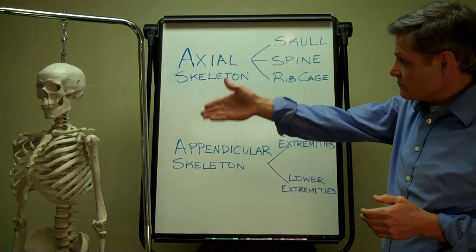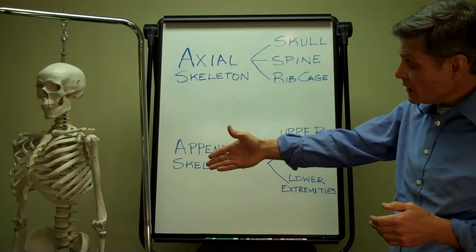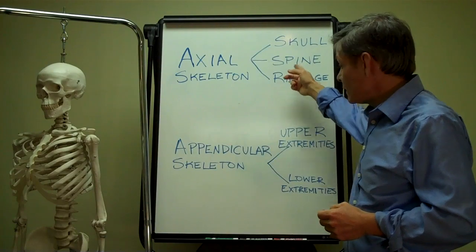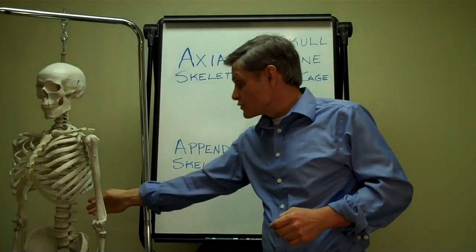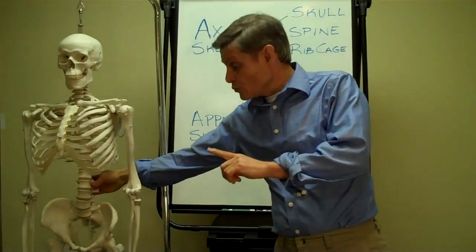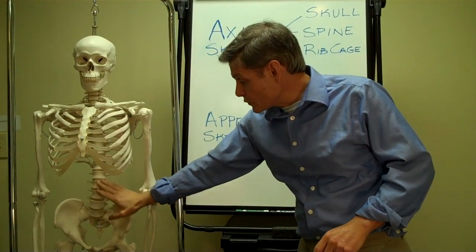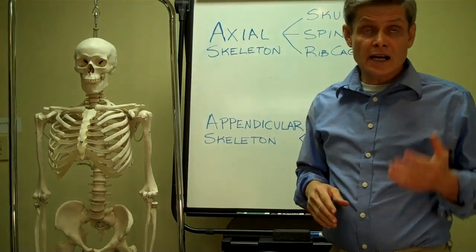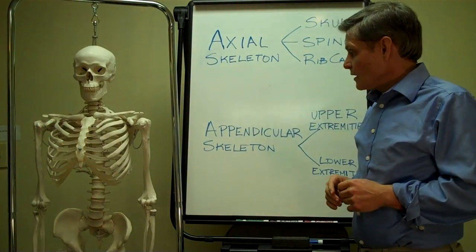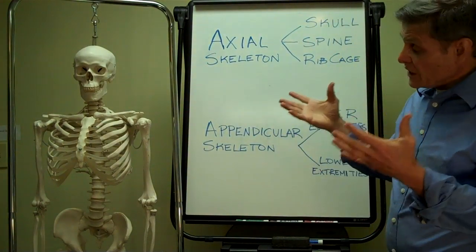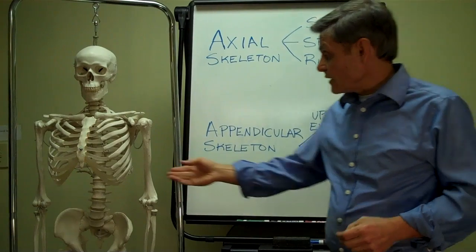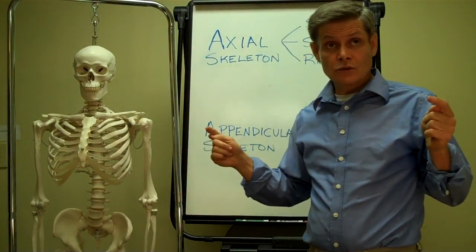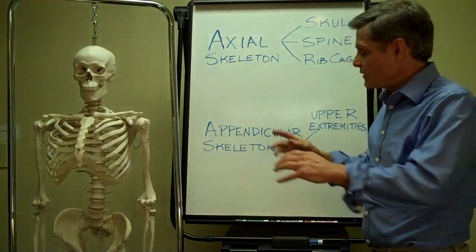So that's the skull, and then you have the vertebral column and the ribs. The vertebral column, or the spine, consists of 26 bones. The top 24 bones are called vertebrae, and the bottom two bones are called the sacrum and the coccyx. Connected to the spine, you have the ribcage — we have 12 pairs of ribs, which are connected to 12 vertebrae.